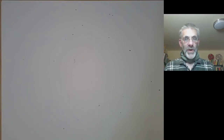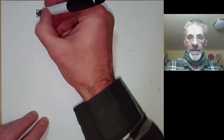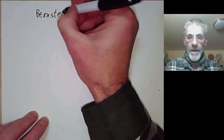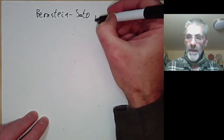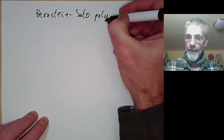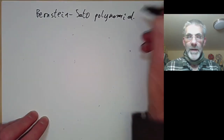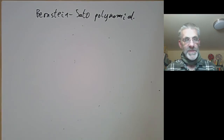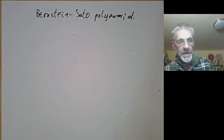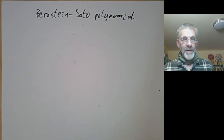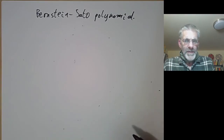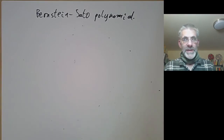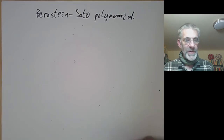This lecture is part of an online commutative algebra course and will be about the Bernstein-Sato polynomial. This lecture will be a bit different from all the others because it uses some slightly non-commutative algebra. A lot of the theory of commutative algebra extends to rings that aren't quite commutative.